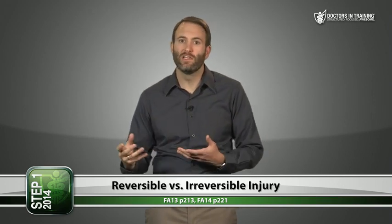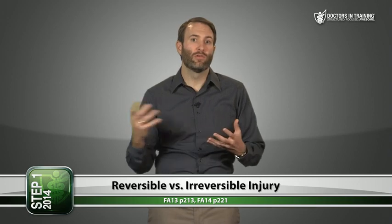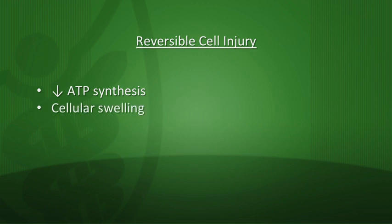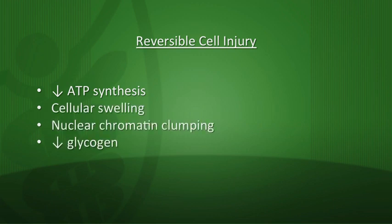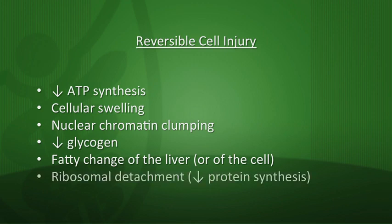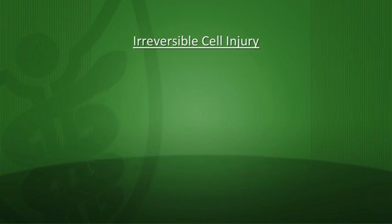Let's talk about types of cell injury — reversible versus irreversible. Reversible cell injury is correctable with sufficient oxygen or nutrients and is usually characterized by a decrease in ATP synthesis. You might see cellular swelling, nuclear chromatin clumping, decreased glycogen, fatty changes of the liver — for example from binge drinking or a mild acetaminophen overdose — and ribosomal detachment resulting in decreased protein synthesis. These characteristics are reversible and cells can survive.